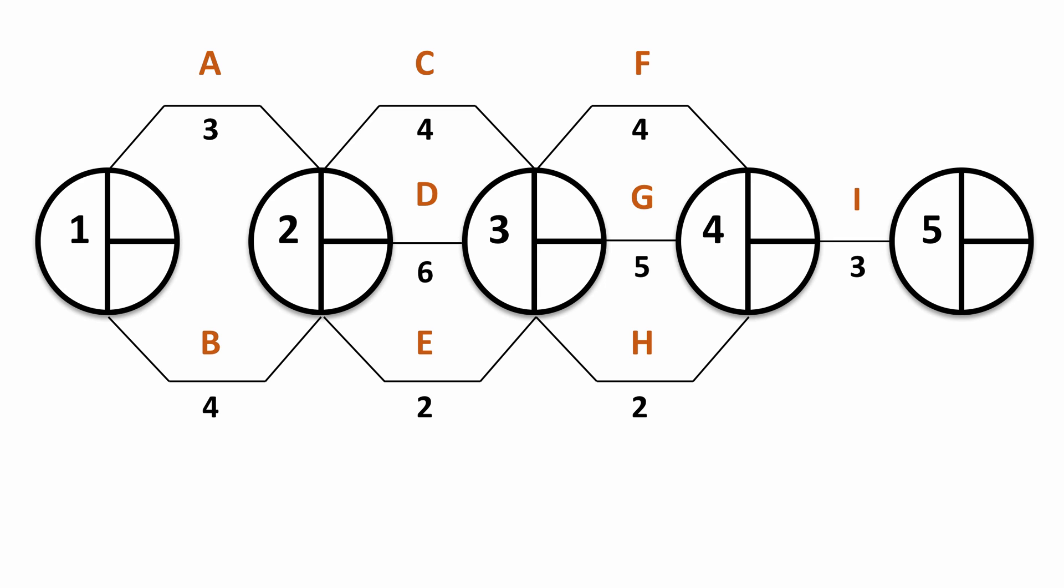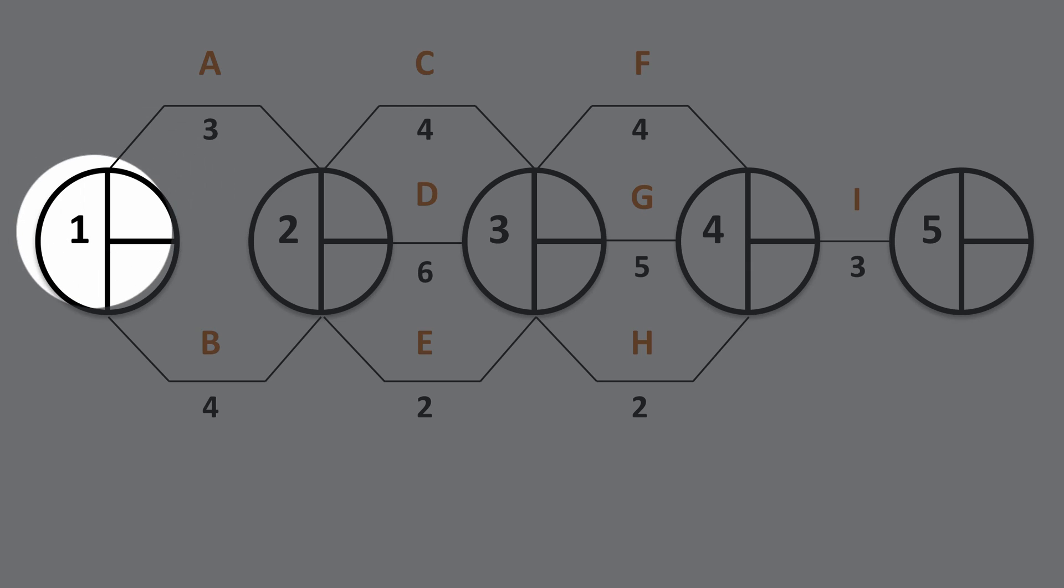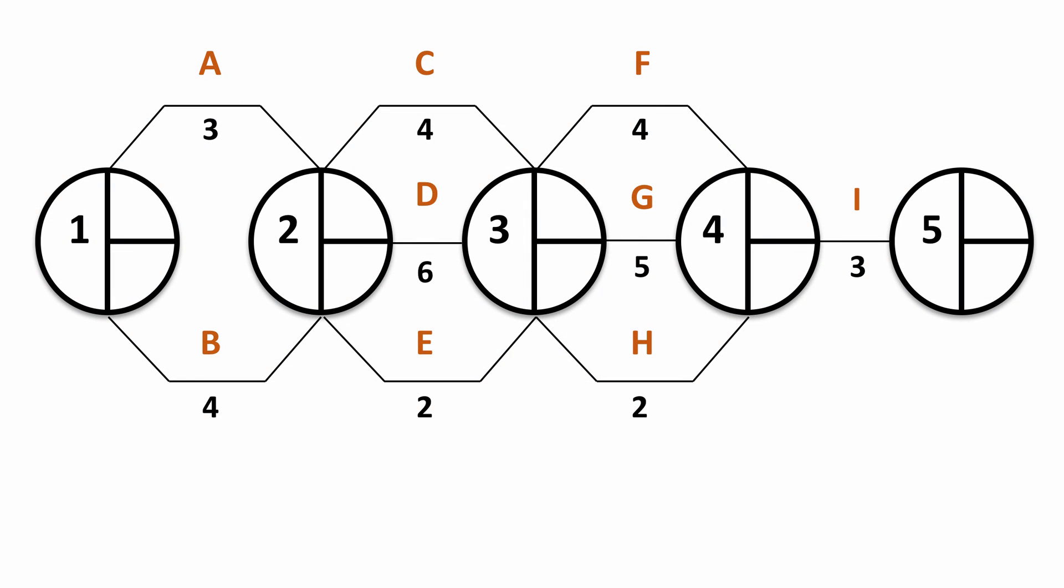We'll use the highlighter circle here just to help us guide our way through this network. At node 1 we have two activities that begin, activity A and activity B, and they converge on node 2. So at node 2 we have to wait for activity A and B to be finished before we can start the next series of activities and we have to wait for the longest activity to finish first. So B is the longest activity, therefore the earliest start time we can start C, D, or E must be 4. We have to wait for B to finish. A would have finished a week earlier.